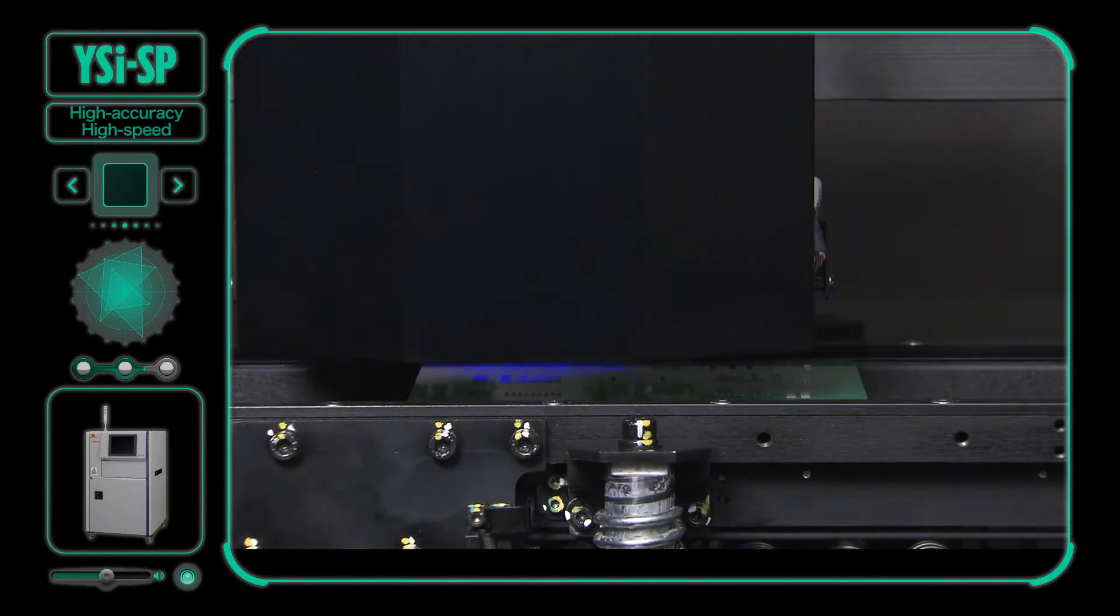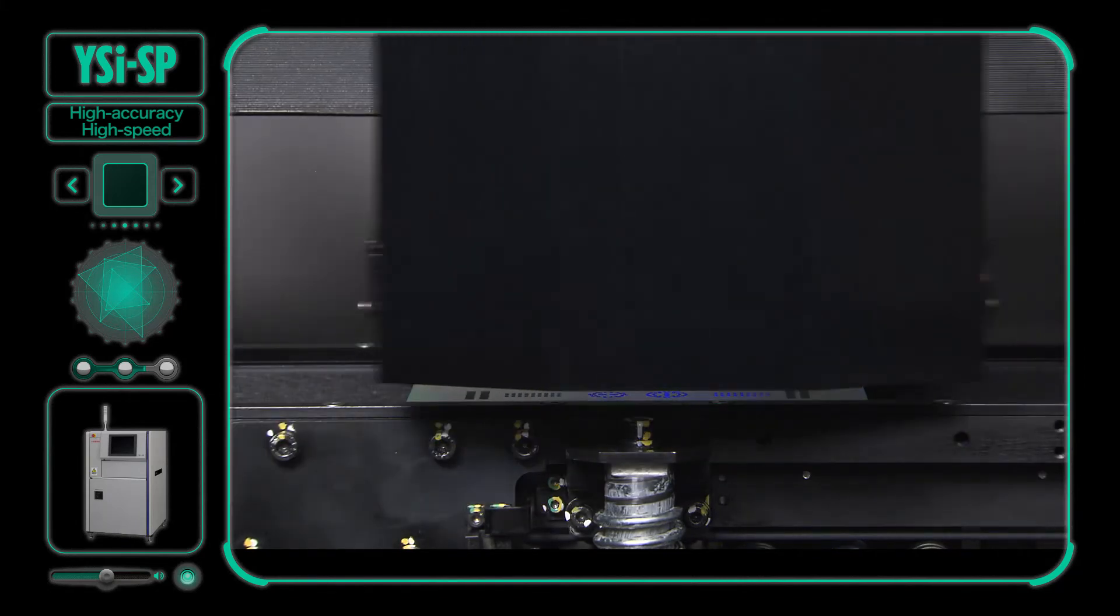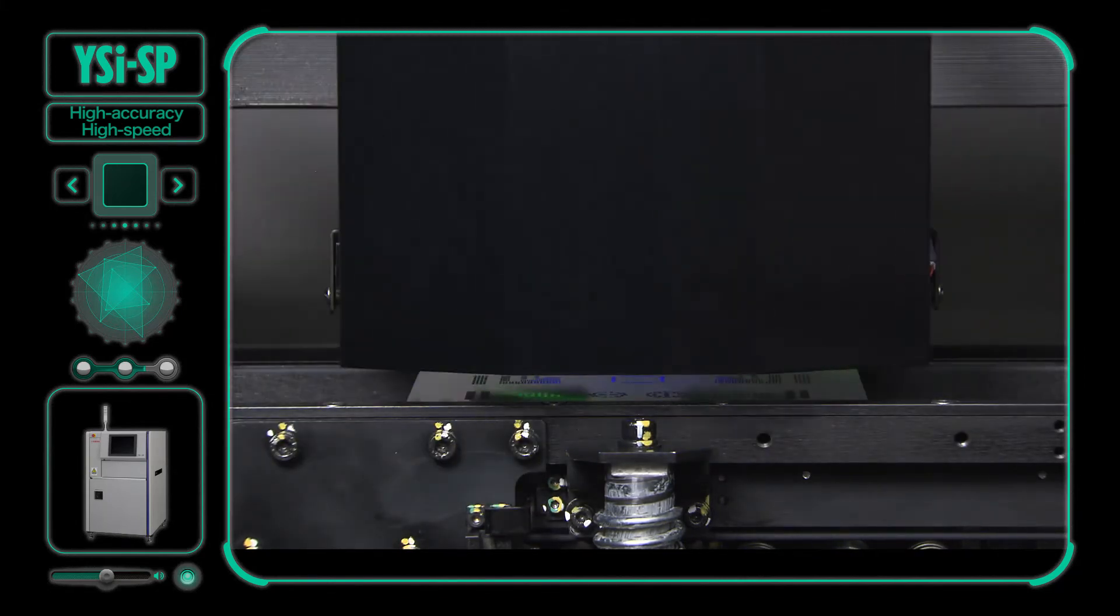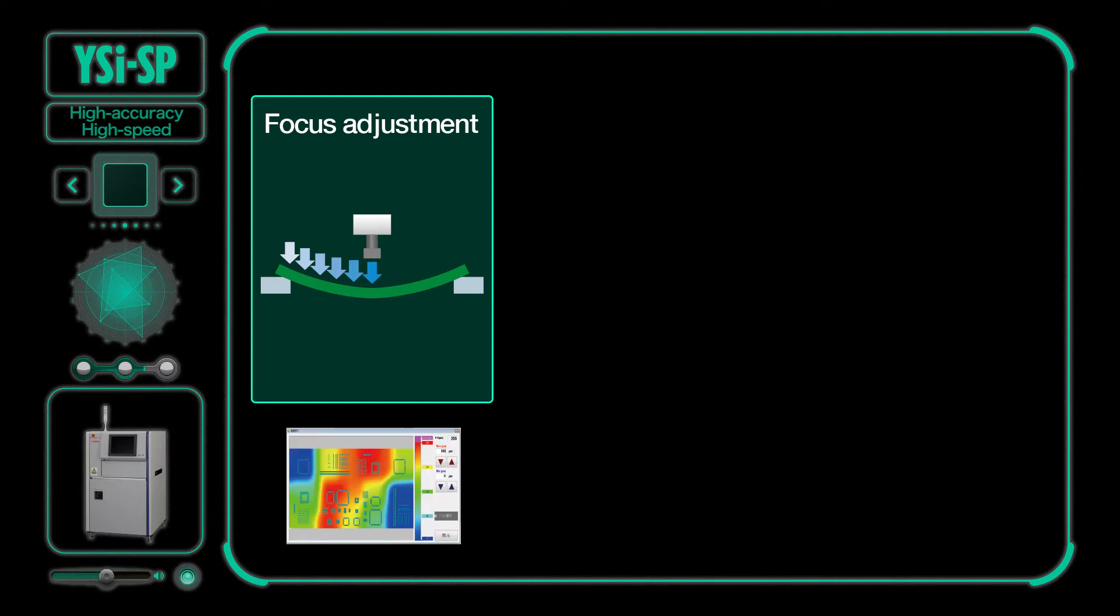High accuracy and high-speed solder paste inspections. The YSISP makes high accuracy 3D inspections via a unique in-house three-step algorithm. Focus adjustment: First, it follows the warp of PCB up to plus minus five millimeters and automatically adjusts the camera focus for each visual field.